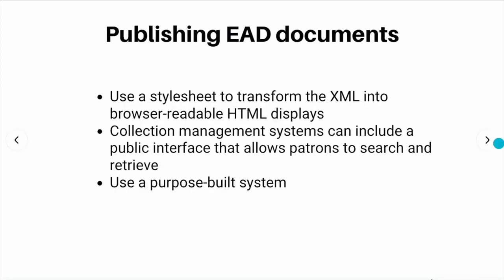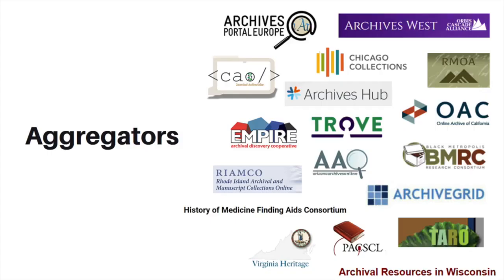There are also a variety of ways that you can publish EAD finding aids. You can use a style sheet to transform the XML into browser-readable HTML displays. Collection management systems can include a public interface that allows patrons to search and retrieve finding aids. Or you can use a purpose-built system — Arclight is a freely available example of the latter. XML documents are also easily shared with regional, national, and international, as well as thematic, aggregators.